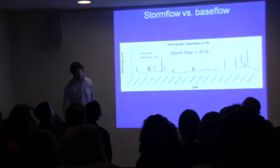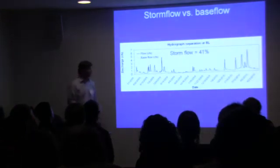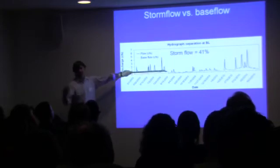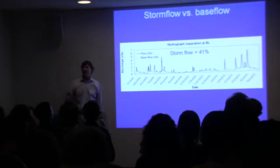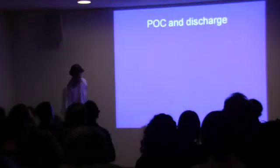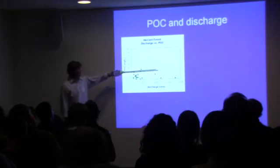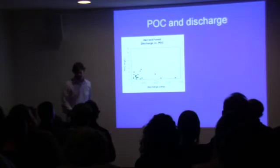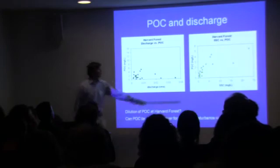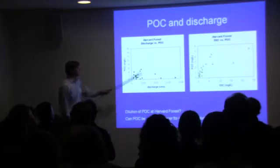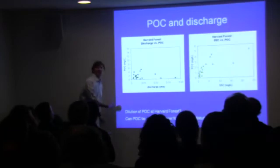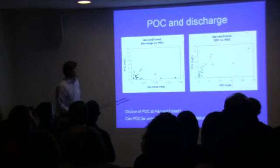Regarding the challenge of segregating storm flow and base flow: storms are important but hard to chase. Just downstream of the beaver wetland, storm flow discharge is probably 41%, maybe 50% — a major component of total discharge. That's important when thinking about the pulse of materials downstream from Harvard Forest. Interestingly, POC — particulate organic carbon — does not increase with discharge, but it does correlate with suspended sediments. Sarah Mitchell, a geomorphologist at Holy Cross, interprets this as POC coming not from upland flow but from sediments being resuspended during storm events, with a dilution factor at higher discharge.